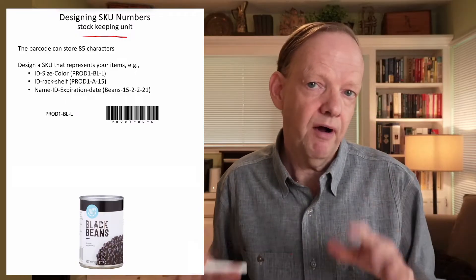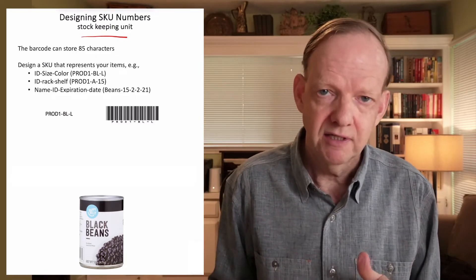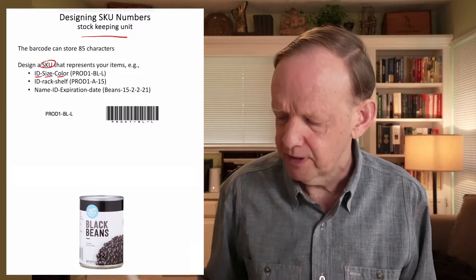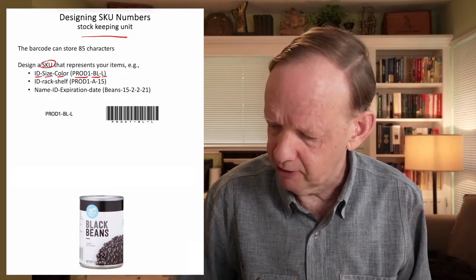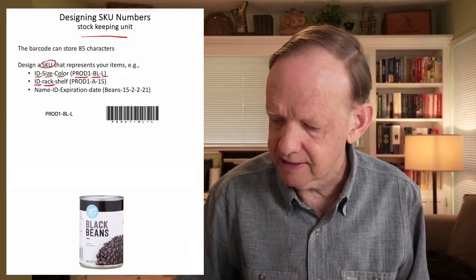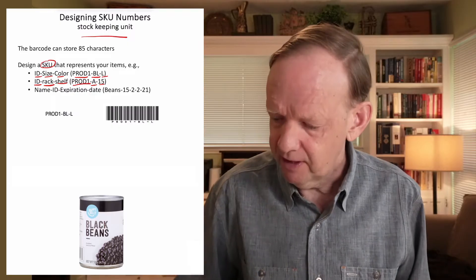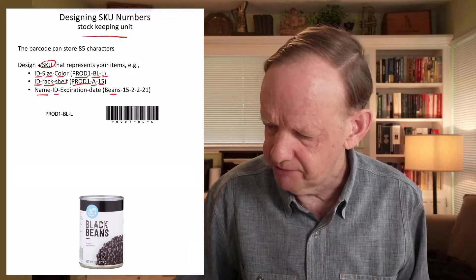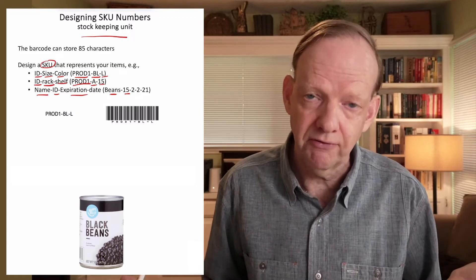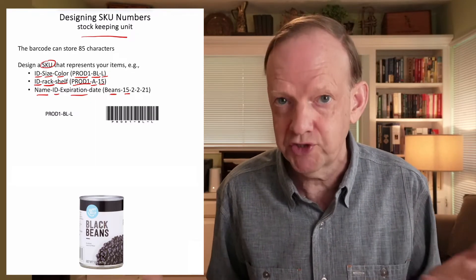You could have a SKU lettering system where you have the ID, the size and color, like product number one, BL for blue, and L for large. Or you could have basically a big warehouse of shelves and racks, and it's the ID of the product, the rack letter, and the shelf number. So product number one, rack A and shelf 15. Or maybe it's a SKU with a name of the product, like beans, the ID 15, and expiration date. The upside about doing this is that you end up with a system that you can recognize yourself, what you actually have and the SKU number represents the particular item and the uniqueness of it.